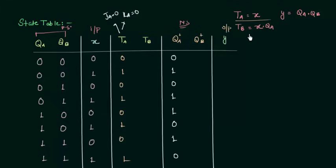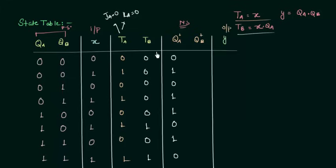Now we will move to TB, which is equal to X AND QA. The first four values of QA are 0, so the first four values of TB are also 0. Then we have 1 AND 0 = 0, 1 AND 1 = 1, 1 AND 0 = 0, and 1 AND 1 = 1. Now we have TB and QB, so we can find QB+. In the first five cases TB is 0, meaning memory, so QB+ is 0, 0, 0, 0, 0.